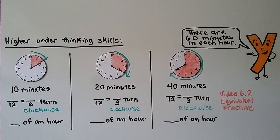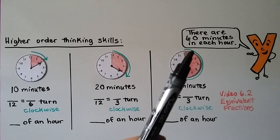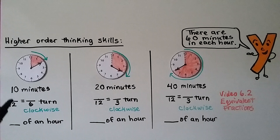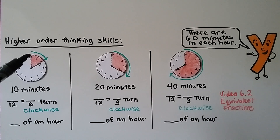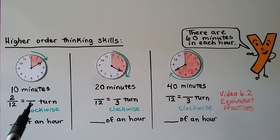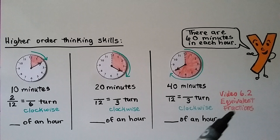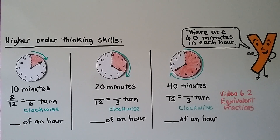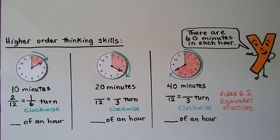Let's try a few higher-order thinking skills problems. Remember there are 60 minutes in each hour. Here, 10 minutes has elapsed. What fraction is that — what twelfths? Look at the minute hand; it's pointing to the 2, which is 2 out of 12 numbers — that's two-twelfths. And two-twelfths is equal to how many-sixths? We think 12 divided by 2 is 6, so we divide the numerator by 2 as well: 2 divided by 2 equals 1. Two-twelfths is equal to one-sixth — that's one-sixth turned clockwise. We can see the arrow is going in the clockwise direction.